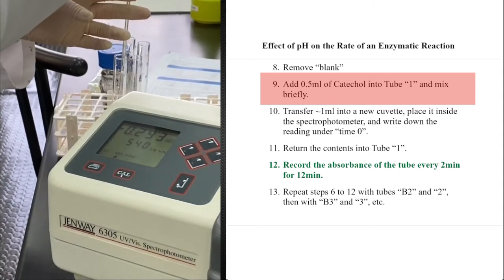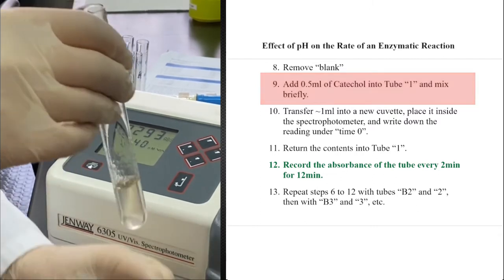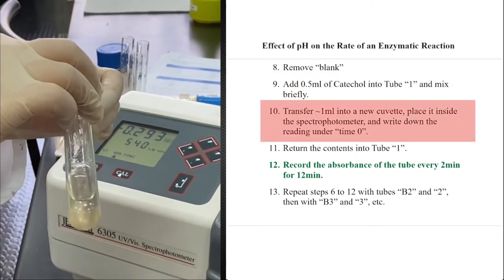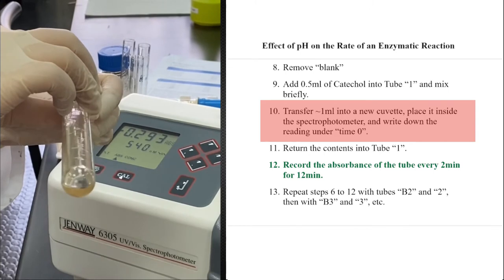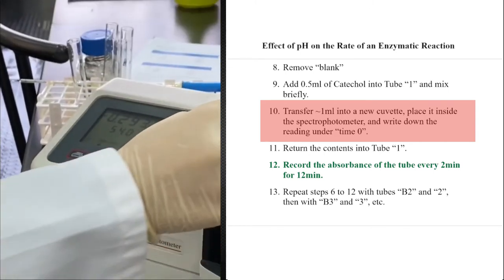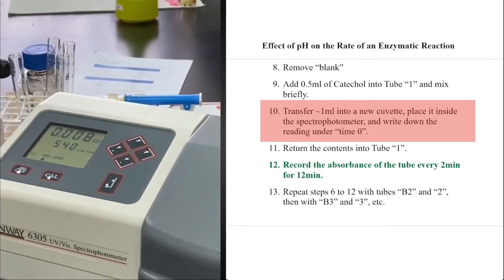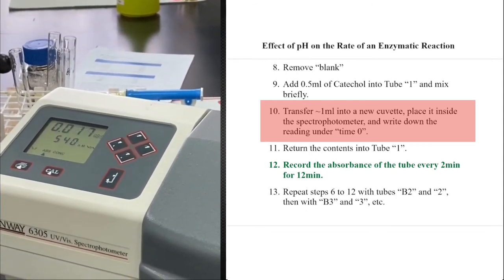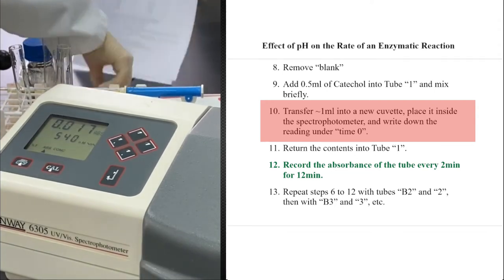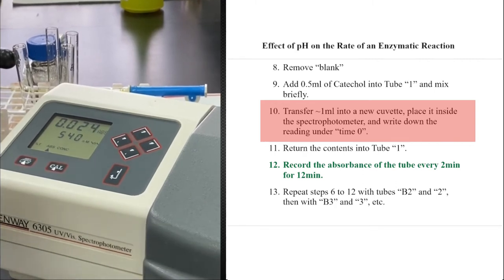So 0.5 ml of catechol were added. Mix the components a little bit and transfer to a cuvette. Take the first reading. Our first reading is 0.017.